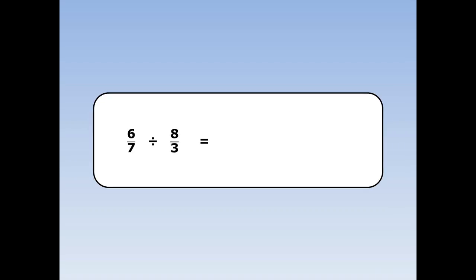6 sevenths divided by 8 thirds. Turn the second fraction upside down and multiply. 8 thirds turned upside down is 3 eighths. Now 6 and 8 can both be divided by 2, so we can cancel. 6 divided by 2 is 3, and 8 divided by 2 is 4.